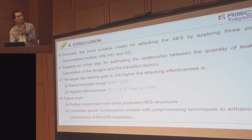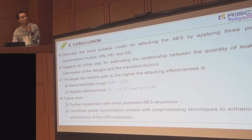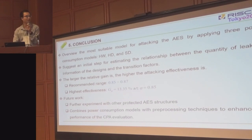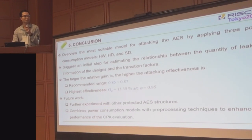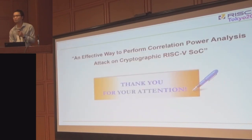Finally, in our conclusions, we selected an initial step for evaluating the frequency with the quantity of leakage information of the design and the access regulator. We recommend using an optimal range from 0.85 to 0.87, where we can get high effectiveness of around 13% improvement. In future work, we want to implement with other products that we have structured, and also combine our construction models with pre-processed methods to enhance the performance of CPA evaluation. Thank you for your attention.